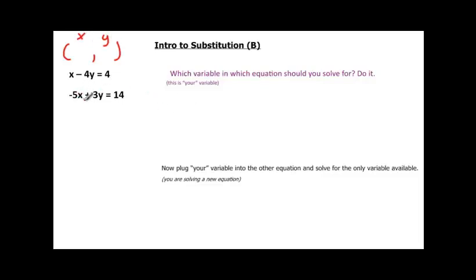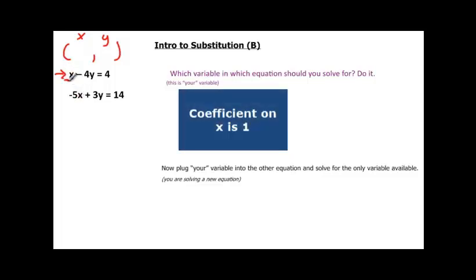So in this case, we don't have an x equal or y equal isolated yet, so we have to do that first step, we have to isolate. Now we have two choices for x's and two choices for y's, whichever equation we want to take. I'm going to take the top equation. Can anybody guess why? It would be because this coefficient on x is just 1.